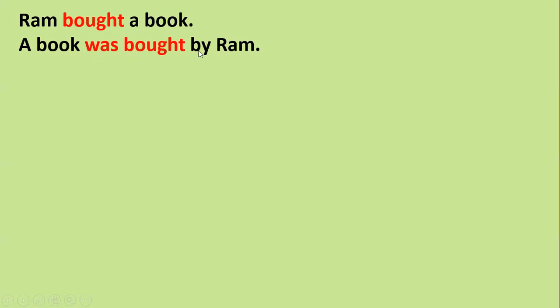Next example: 'Ram bought a book.' The verb is 'bought' — past tense. For past tense the formula is 'was/were + past participle': 'A book was bought by Ram.' If it is plural 'books', then you write 'Books were bought by Ram'.